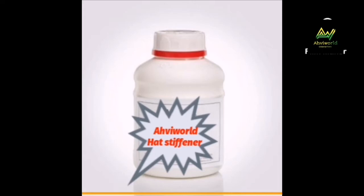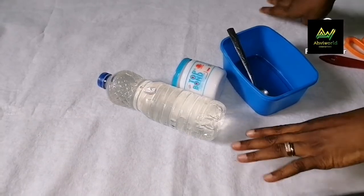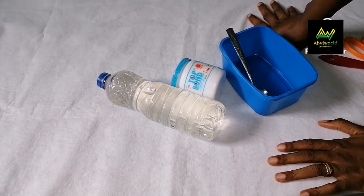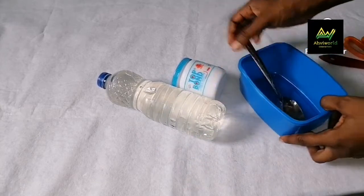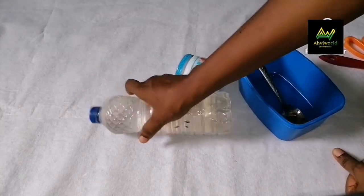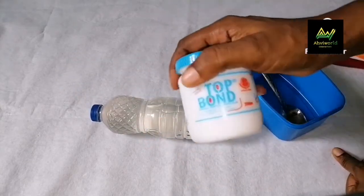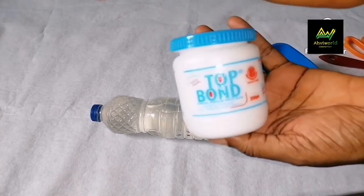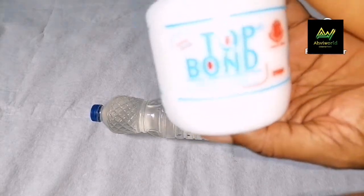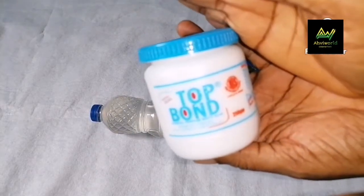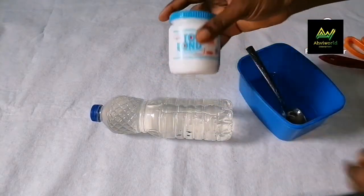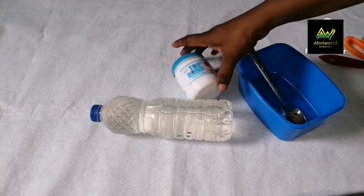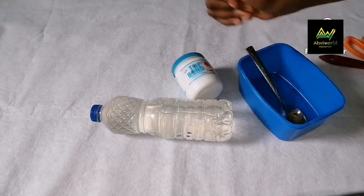Here are the items needed for making this stiffener. I have a bowl here with a spoon for mixing, a bottle of water, and top bond. This is the main ingredient. I hope you can see it. It's top bond. You can get this in any bookshop. They use it mostly for books and paperwork.